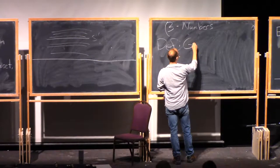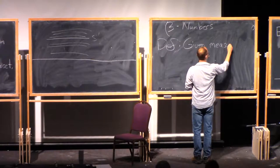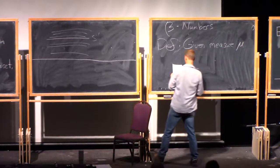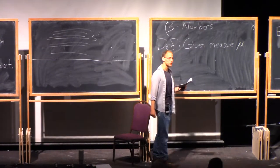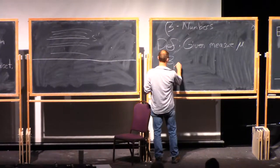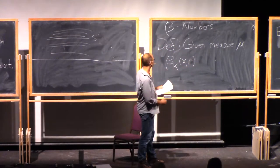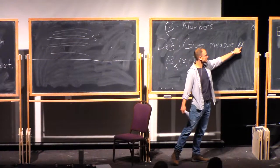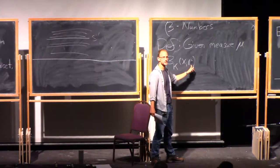So given a measure mu and an integer k, we define the L2 beta numbers to be the following. So beta_k is a function of x and r, and you should view x and r as being a ball here. What this is going to measure is how far away is mu from being contained inside an affine subspace on this ball, centered here of that radius.